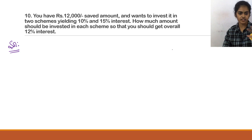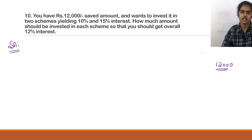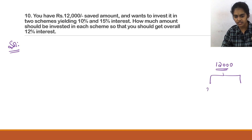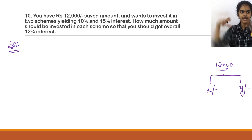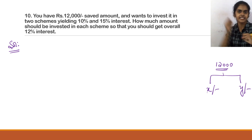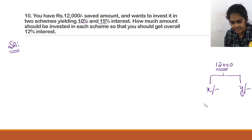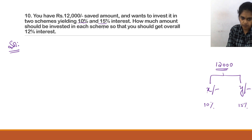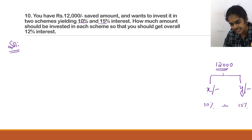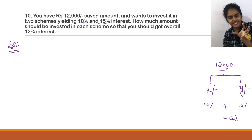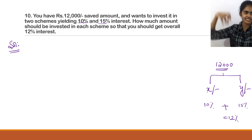Question 10: You have 12,000 saved and want to invest it in two schemes. One scheme yields 10% interest and the other yields 15% interest. How much should be invested in each scheme to get an overall interest of 12%?